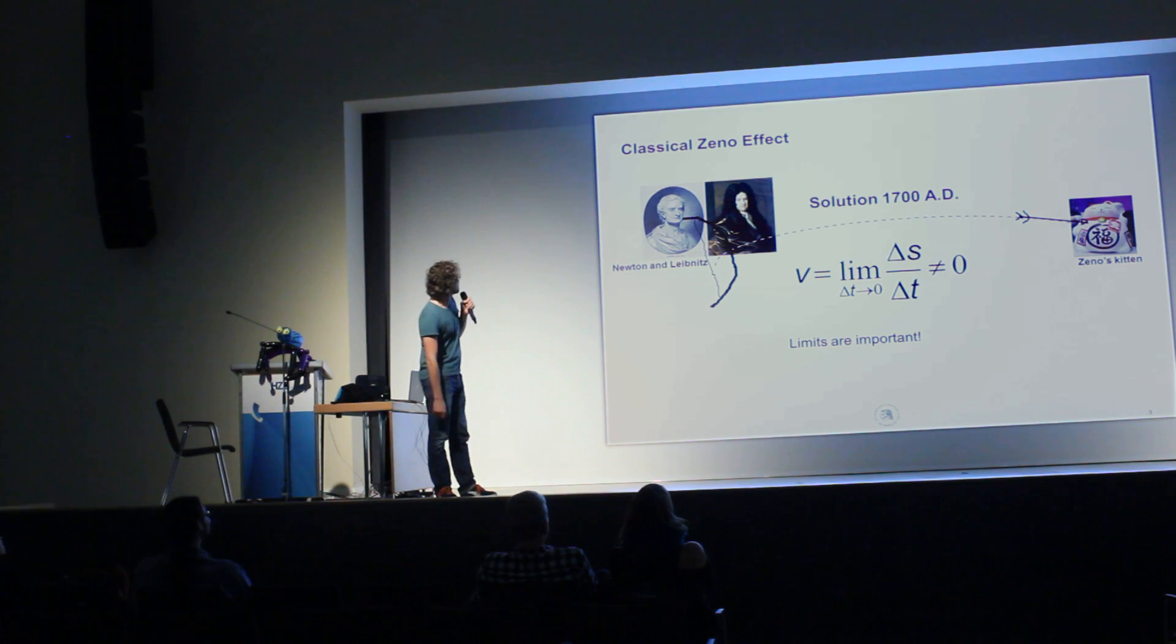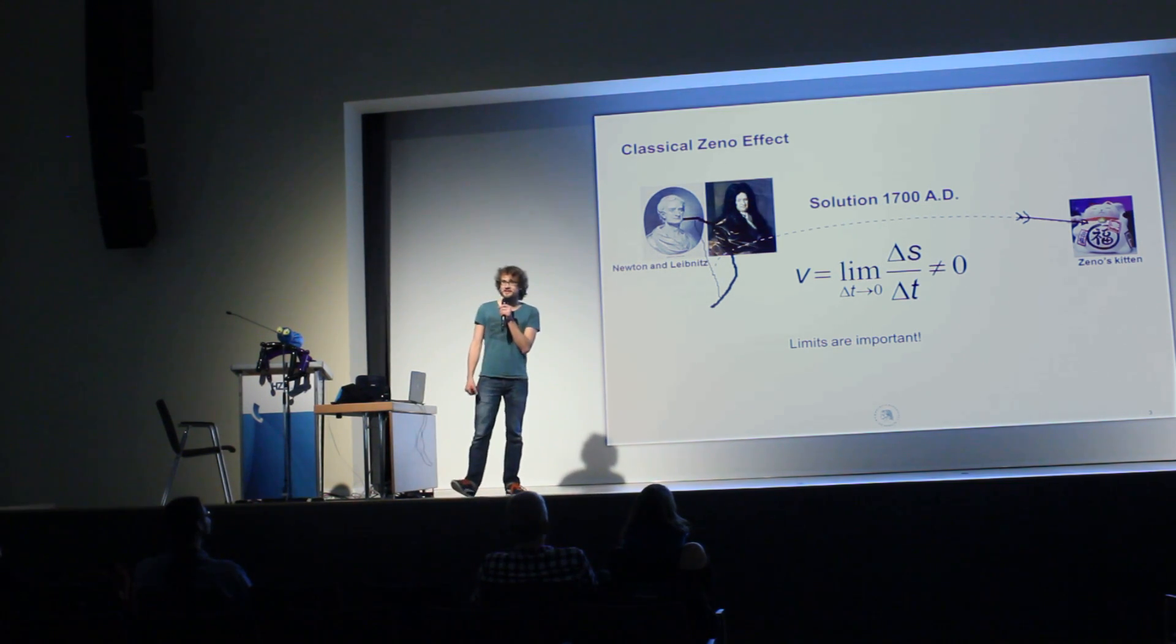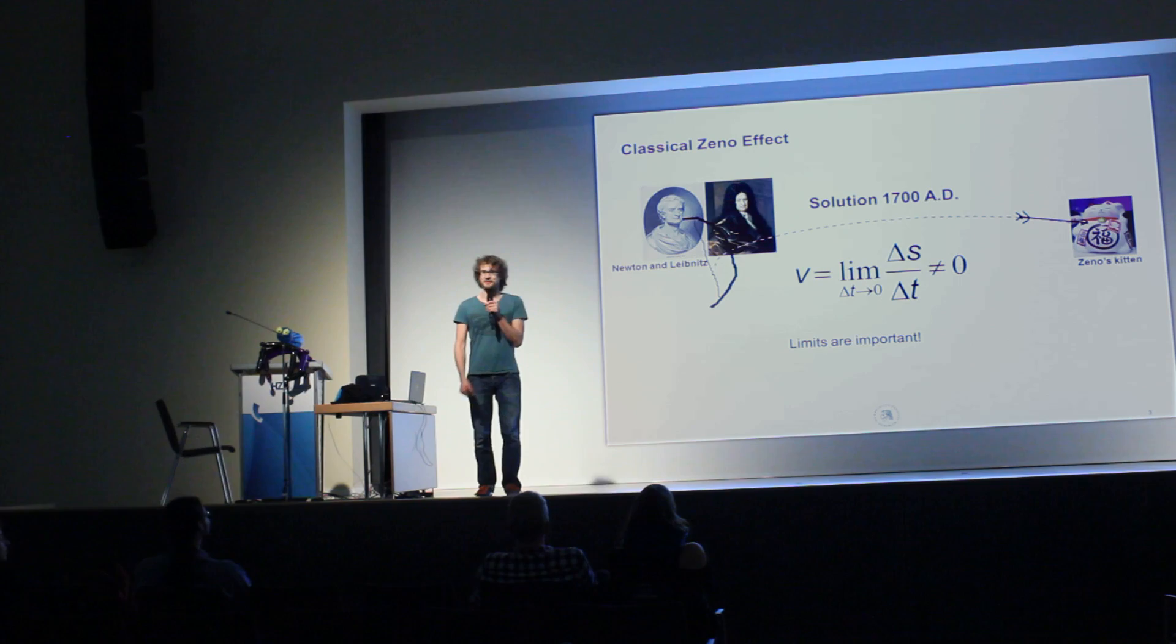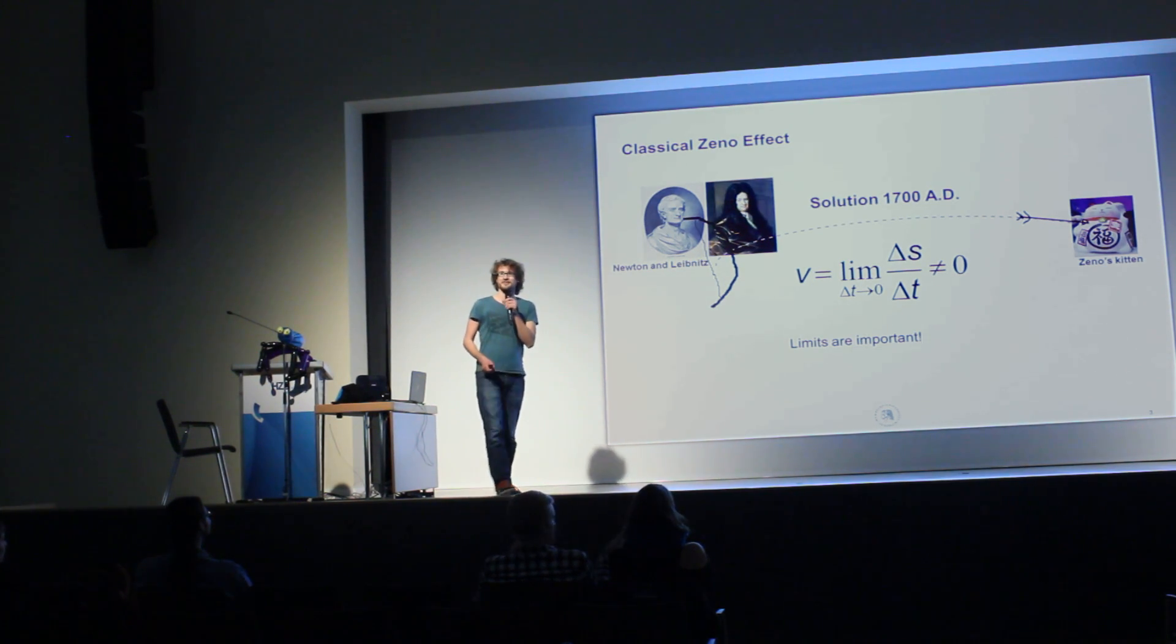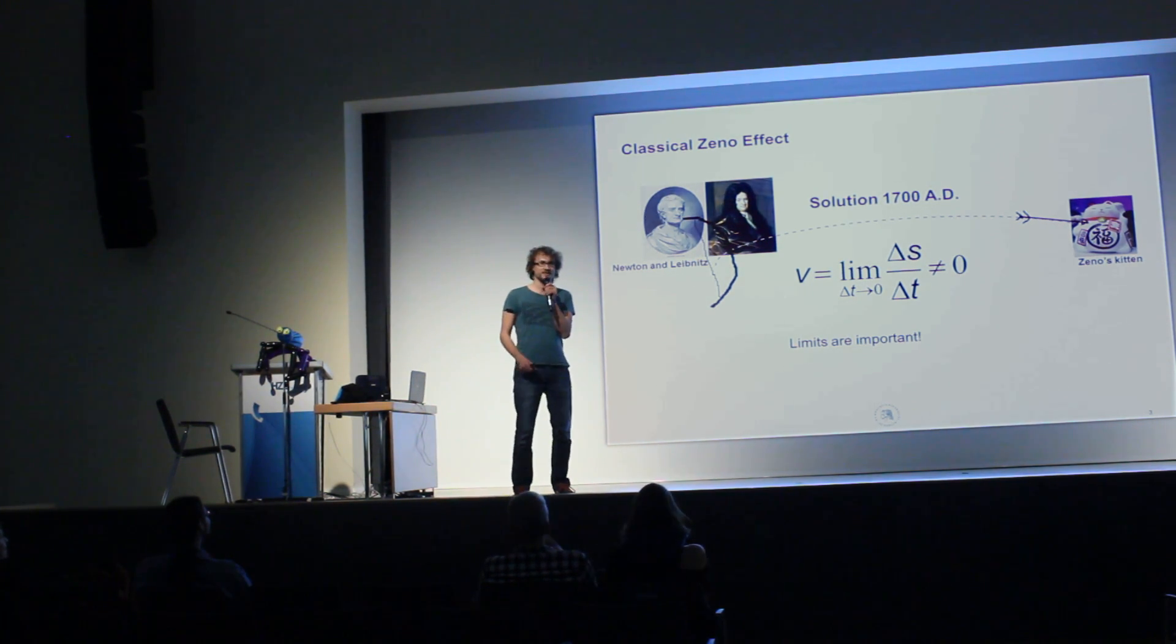And then those two guys Newton and Leibniz, they invented calculus and redefined the velocity. So they introduced the limit here for delta t to zero and if you use the proper definition of velocity everything works. So what can we learn from this? It's important to know your limits.